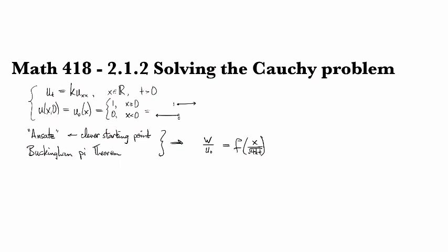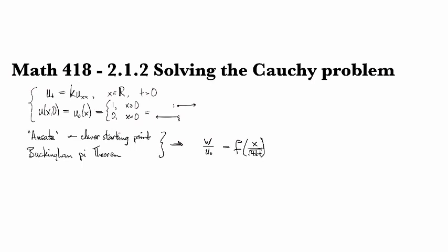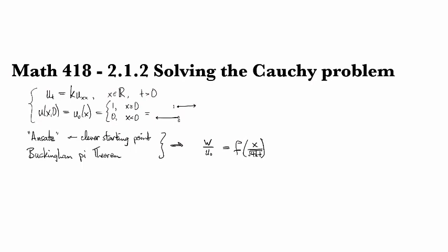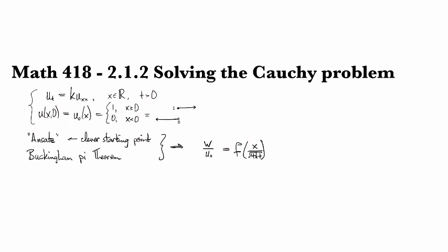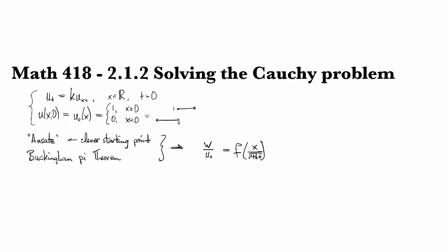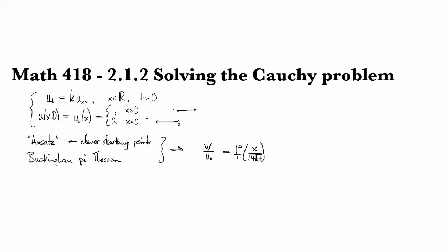Because if we divide W by U-naught, then the corresponding quantity would have no dimension, all the units would cancel out. And that's because W is in degrees and U-naught is in degrees of temperature, that is.